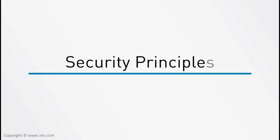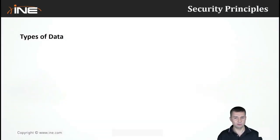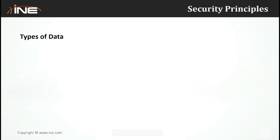In this session we'll talk about different terms and concepts related to security. Let's start with the different types of data. At a very high level, there are two main ways to classify information. Data at rest is data sitting in one place, like on a storage medium — a laptop or a hard drive. Data in motion is data moving across a network, like when you send a file to someone else. Data at rest doesn't move, while data in motion is information being sent and exchanged over a network.